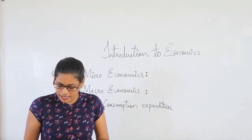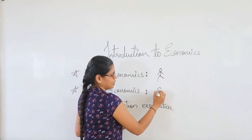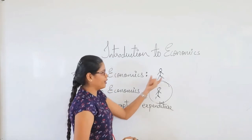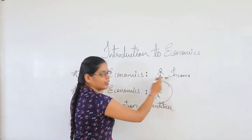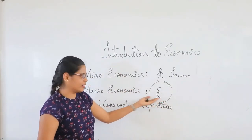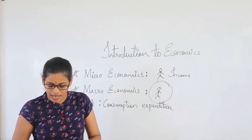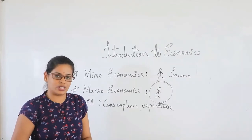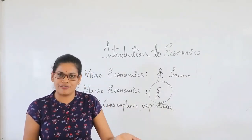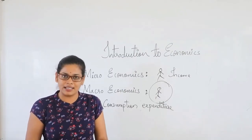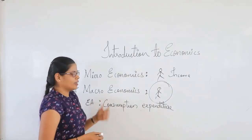Similarly, when we add up all the incomes of individuals in the society, it becomes the total income of the country. If we are talking about a single person's income, that comes under microeconomics. But if we are talking about the income of the entire population of a country, then it comes under macroeconomics. Similarly, we have the problem of unemployment and economic growth and development that affect the whole nation — such as five-year plans, transportation facilities, construction of buildings, and hospitalities provided by the government. These all come under macroeconomics.